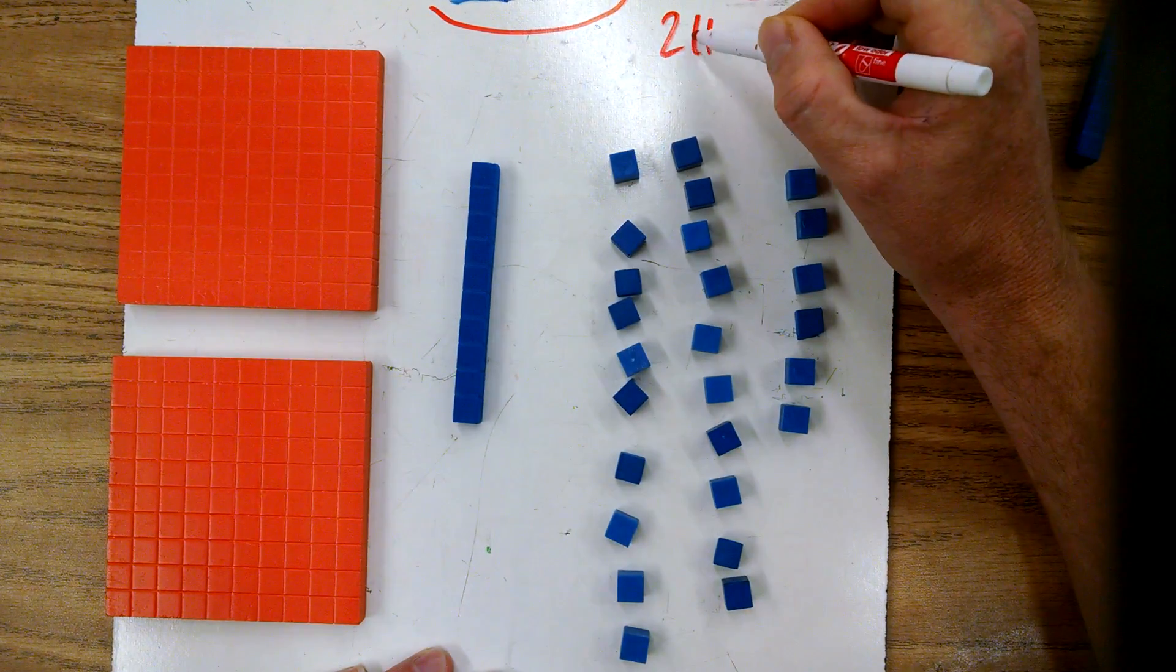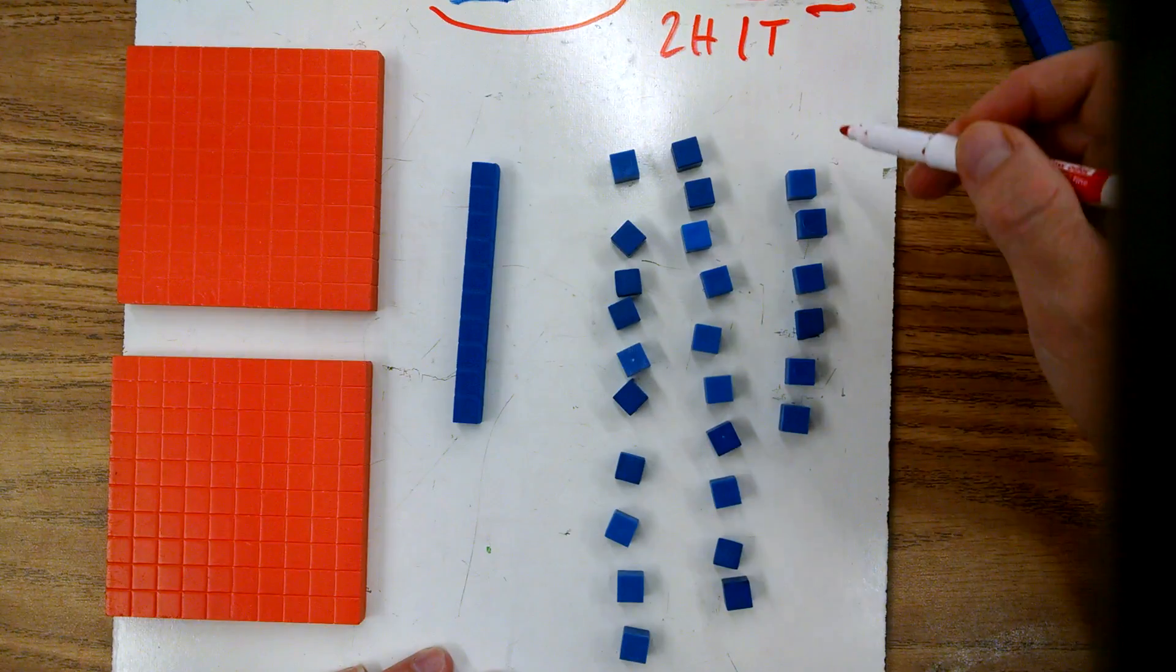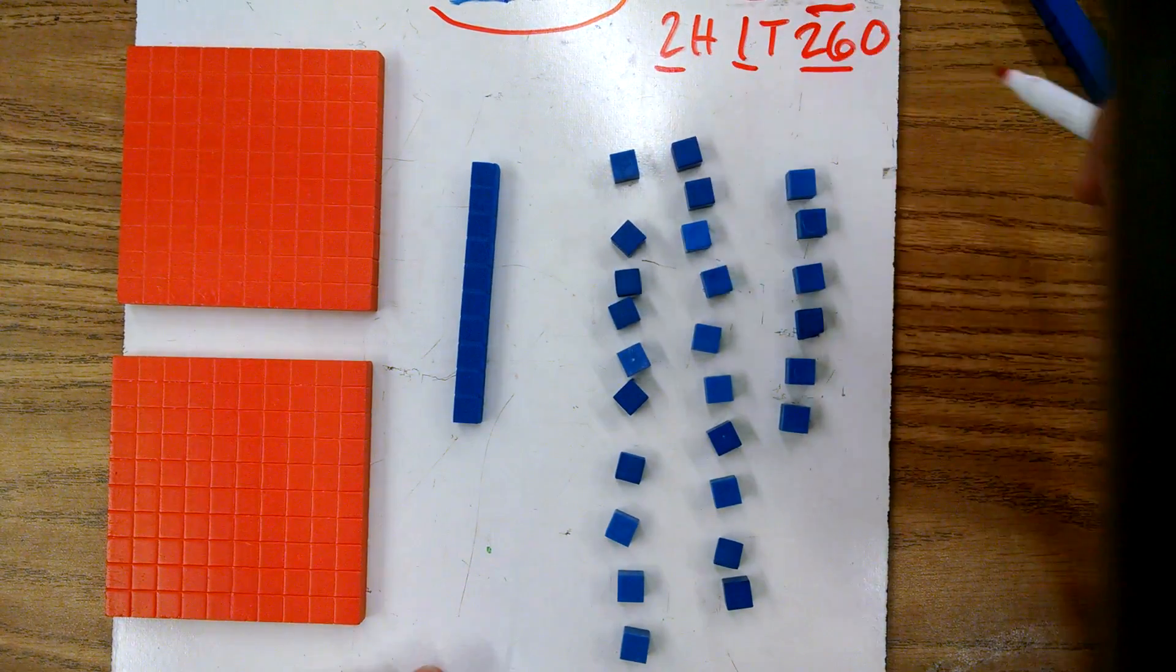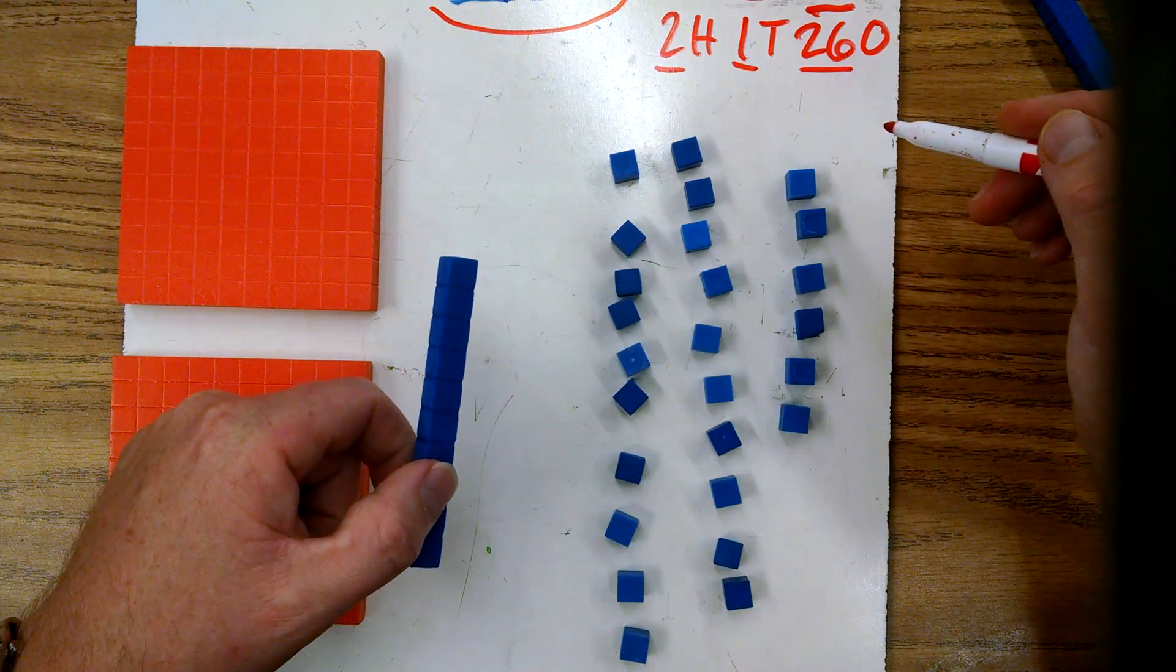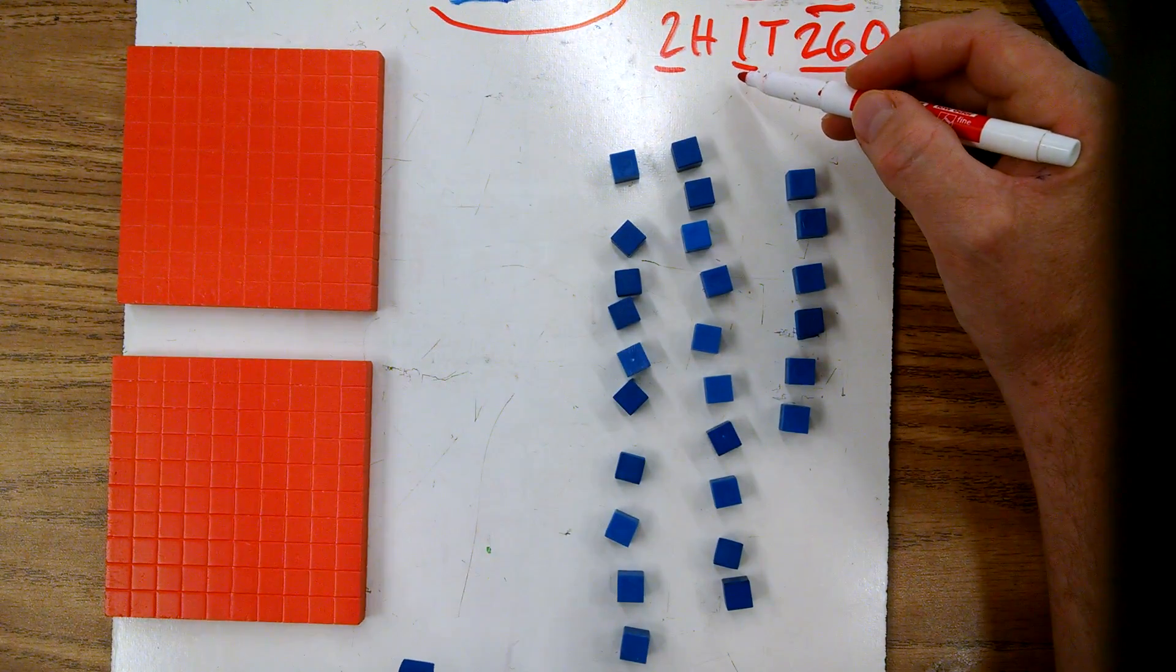So we still have our two hundreds, we have one ten this time, and we have 26 ones. We can do the same thing with this and we'd have, you got it, 36 ones, and we would have zero tens that time and still our two hundreds.